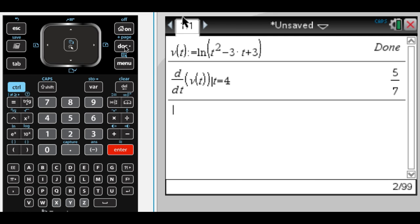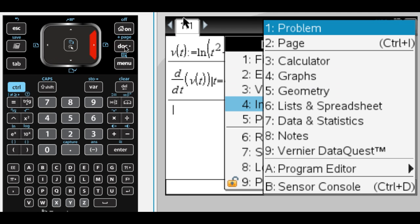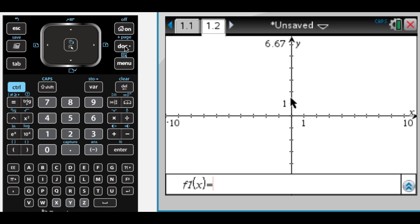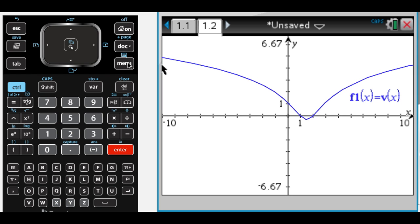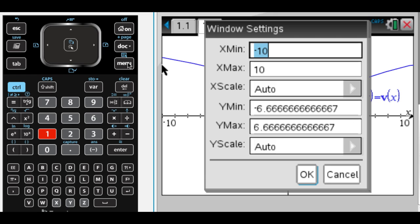The next question is to find all times at which the particle changes direction. So I will do that by graphing v of x in this case. I don't want to graph v of t because nothing will show up. So with x, let's change the window, menu 4, 1, and we want 0 to 5 because that's what they told us.